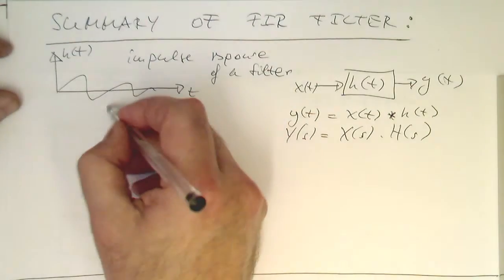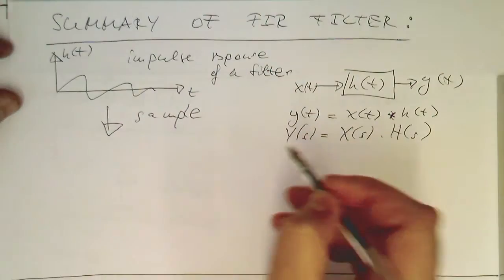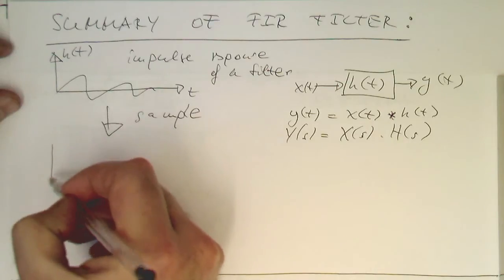What we need to do is just sample this impulse response, getting a sampled impulse response.